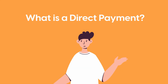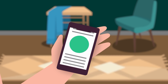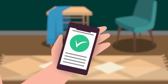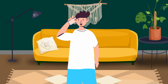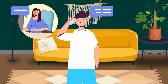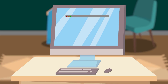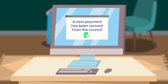What is a direct payment? Once I was assessed as eligible for support, I asked for a direct payment. It gives me more choice and control over my life. A direct payment is money from the council for me to choose and pay for my support.